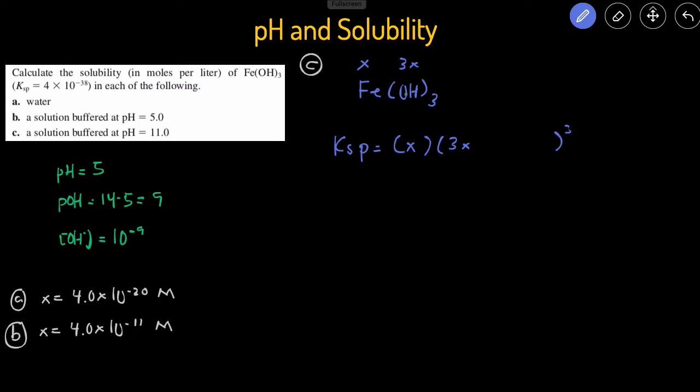So that means the Ksp is going to equal x times 3x, and then cubed. But we're going to have to add the OH that's already present, that's previously present at a pH of 11. So we still have to do this part where if pH is 11, then pOH will be 14 minus 11, which is 3, then that means that the OH is going to be 10 to negative 3. So we're still going to have to add the OH that's present initially. But the K value, since it's small, we can substitute that in.